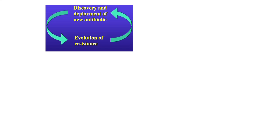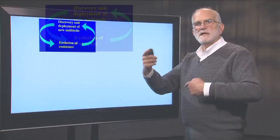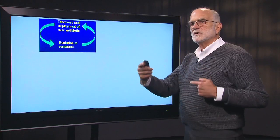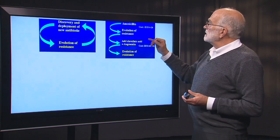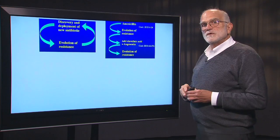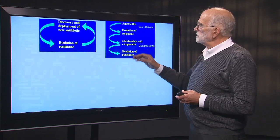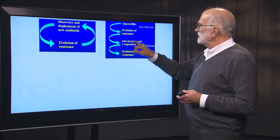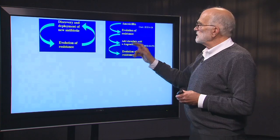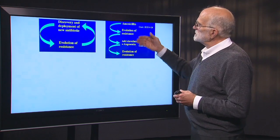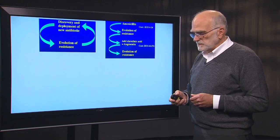So the concept I've been trying to convey is that we discover and deploy a new antibiotic, resistance evolves, we go back and try to discover another one, resistance evolves — that is called the antibiotic treadmill, or the drug-bug coevolutionary arms race. In the case of amoxicillin, it cost about $4 to $24 to treat a patient. Resistance evolved, then clavulanic acid was added as Augmentin, and that cost about $64 to $172. And then resistance evolved to that. So not only does resistance evolve, but it gets more expensive to treat patients.